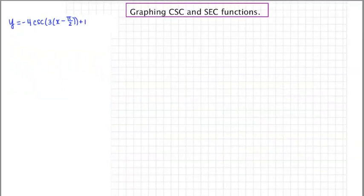To start, I'm going to consider what the reciprocal function would look like. That would be y equals negative 4 sine 3 times x minus pi over 2 plus 1.